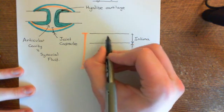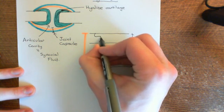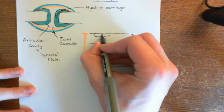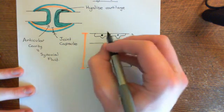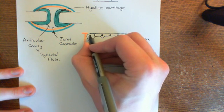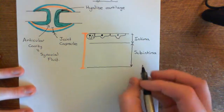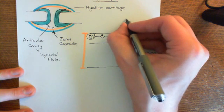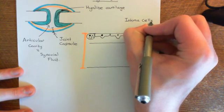Basically, you have a layer of cells which faces into the articular cavity. Here they are, and they have their bases towards the articular cavity. You have two types of cells that face into the synovial fluid. These cells which actually face into the articular cavity are known as intima cells. All of these cells that I've drawn so far are intima cells.